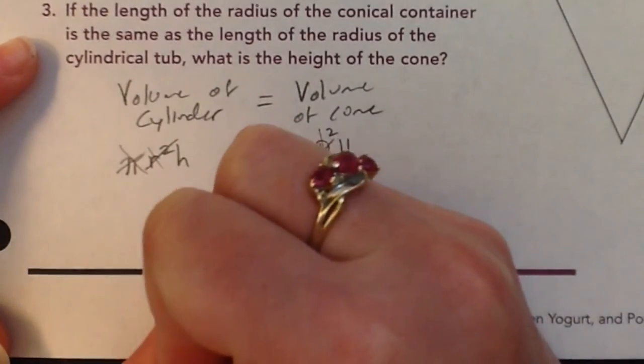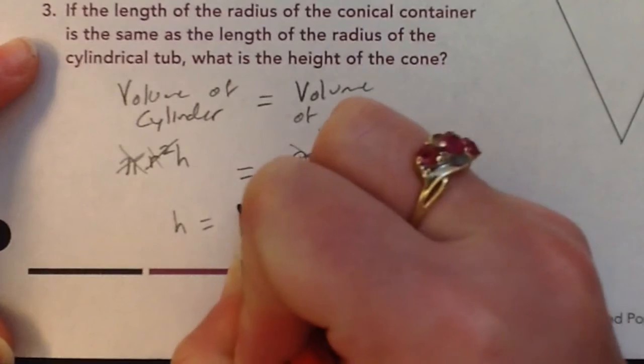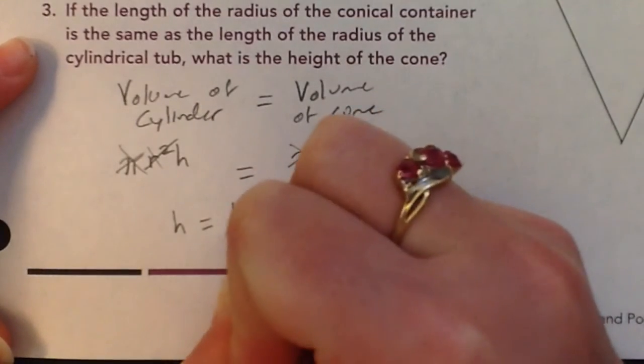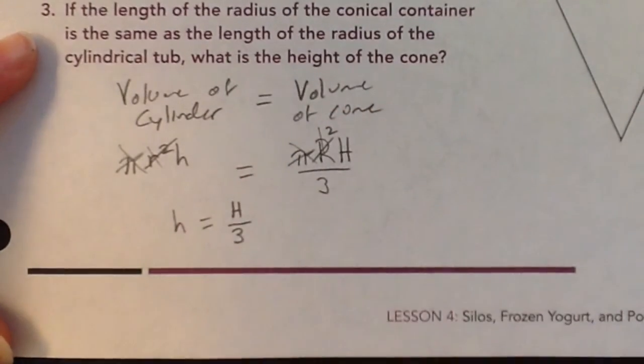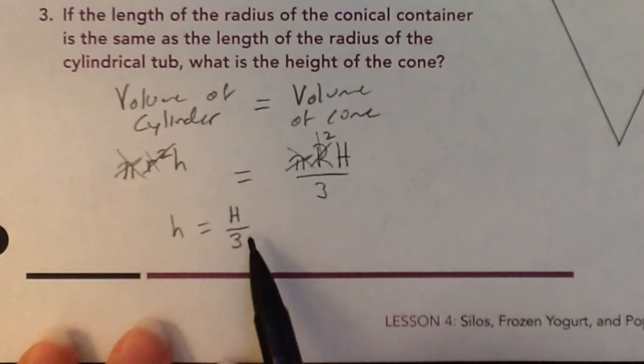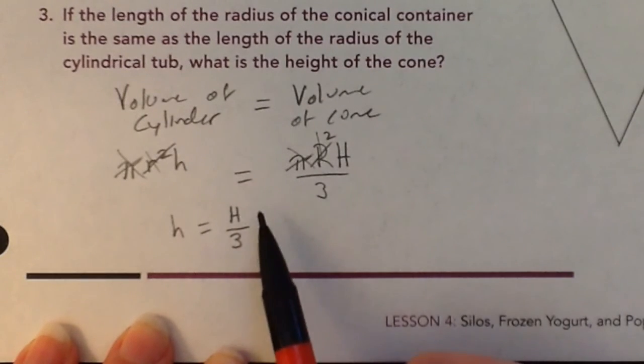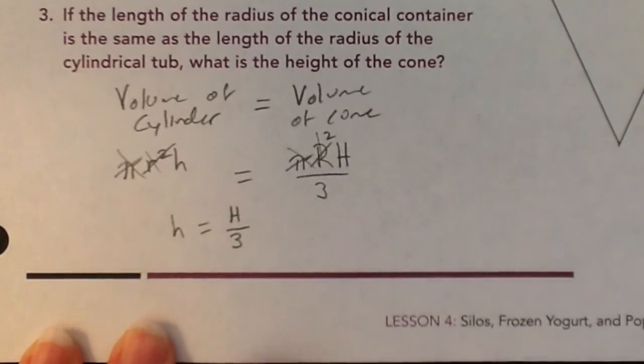So basically we're left with the height of the cylinder needs to be equal to the height of the cone divided by 3. So if we wanted just the height of the cone alone, it makes sense that it has to be 3 times the height of the cylinder.